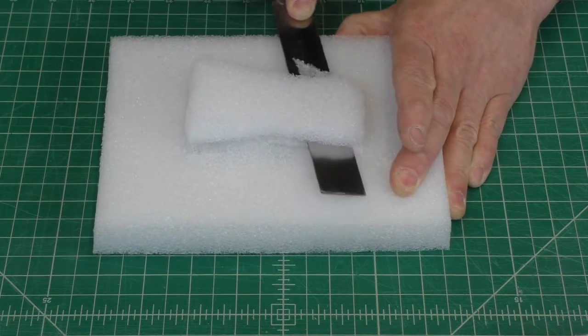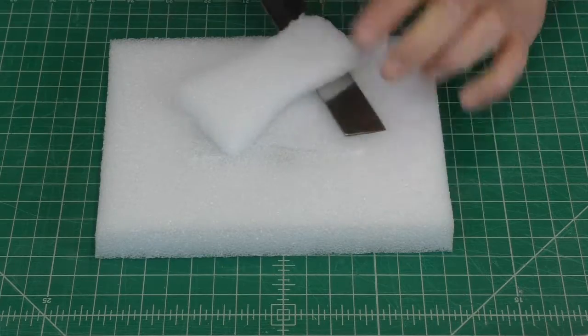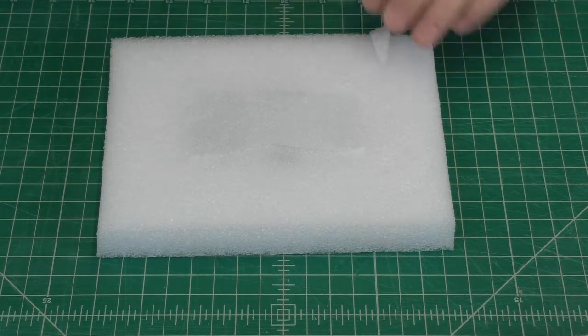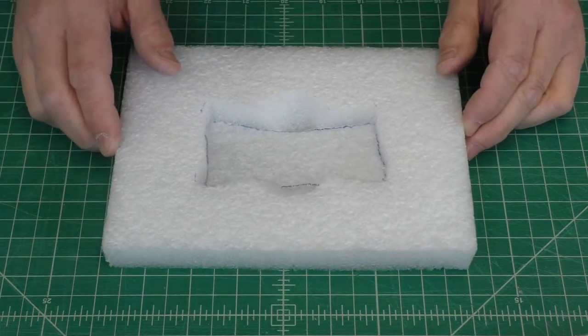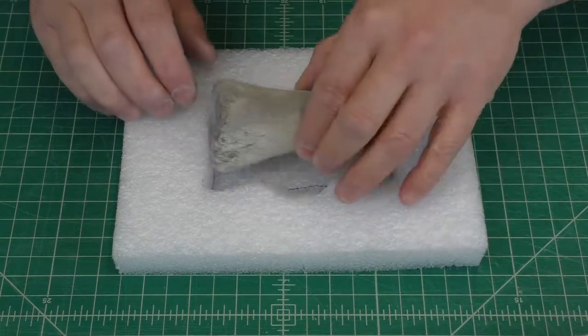If you want, you can tack the plug in place with a little low melt hot glue, but only from the back. Don't glue it to the sides of the cavity. You could also use a heat gun to fuse it to the bed.